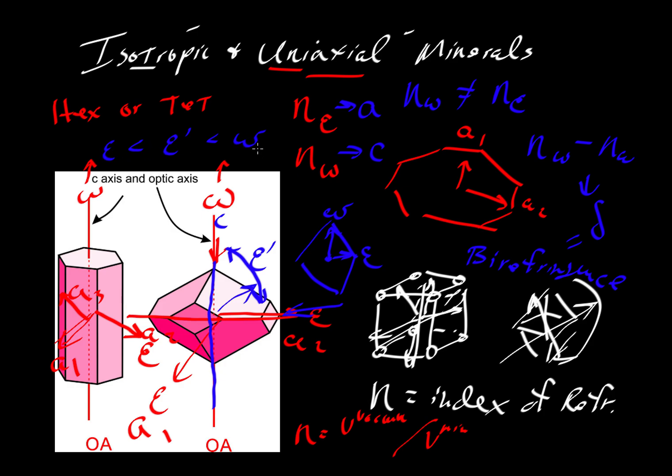It doesn't have to be the case that omega is the largest. It could be that we have epsilon is greater than epsilon prime is greater than omega. But whatever epsilon prime is, however omega and epsilon are relative to one another, the value for epsilon prime or the index of refraction along epsilon prime will be intermediate. So one of these will represent the maximum and minimum velocities, and then any other random direction would be intermediate between those.